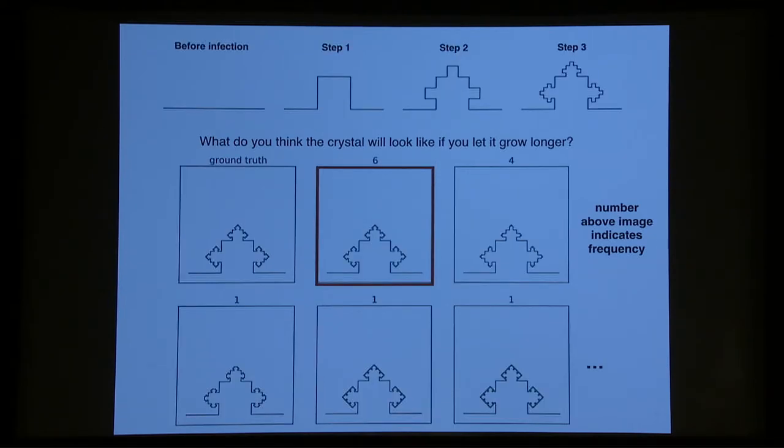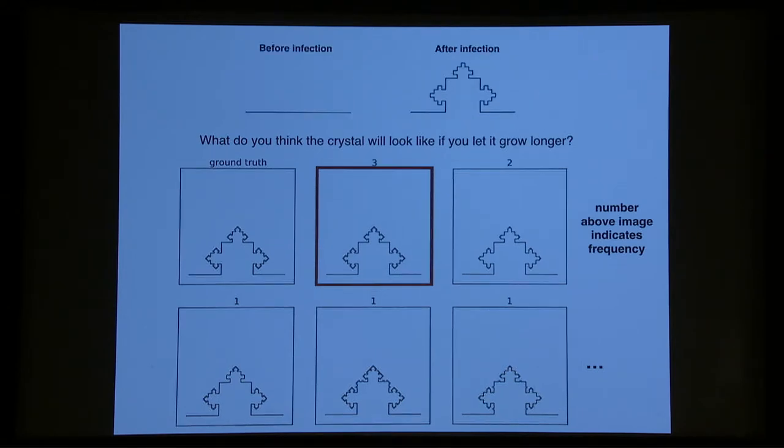Here's a more complicated crystal or program, and this one involved over 100 decisions. And in the stepwise condition, six participants made all those decisions correct and produced exactly the right crystal. And in the latent condition, about three of the participants did.